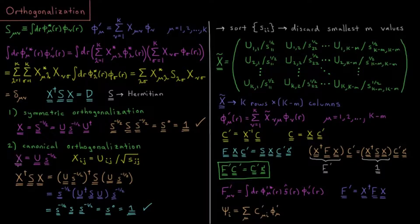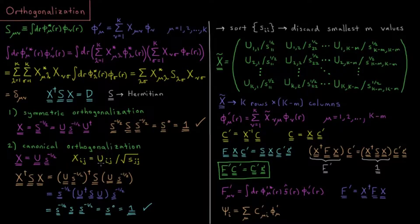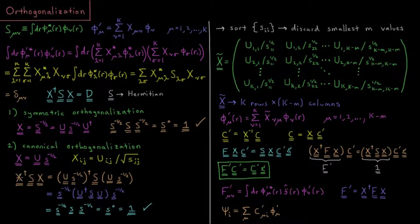For canonical orthogonalization, the transformation matrix is the unitary matrix used to diagonalize S times S to the negative one-half, where we have actually truncated a few of the lowest-order terms in the S to the negative one-half part. The elements X_ij of our transformation matrix are going to be the elements of the unitary matrix divided by the square root of the diagonal elements of our overlap matrix. This is fine as long as those diagonal elements aren't sufficiently close to zero; if they are, we simply ignore and lop off those values. The product X†SX then ends up being equivalent to an identity matrix.